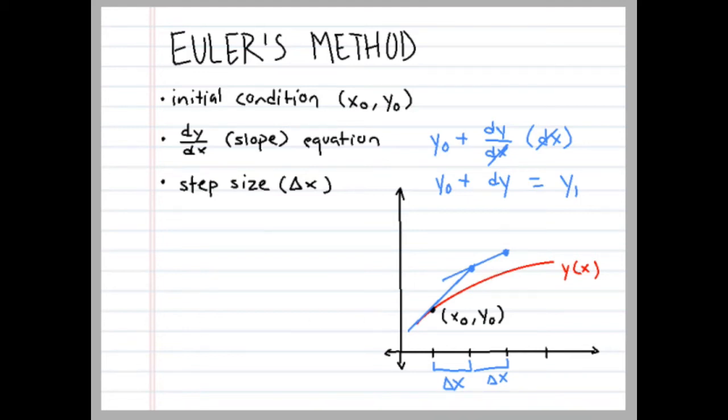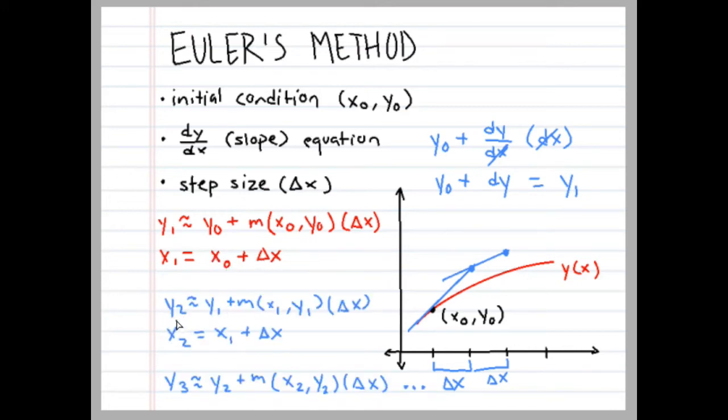We can get a formula from this, and that's just y₁ is approximately the initial y plus the differential equation, I put m because it's kind of like slope, the differential equation evaluated at that initial point times Δx. And x₁ is just going to be the initial x plus Δx. And so on and so forth. So we get y₂ is approximately y₁. You're just evaluating from the last point that you got. So y₁ plus the differential equation evaluated at x₁, y₁ times Δx. And x₂ is just that last x plus Δx.